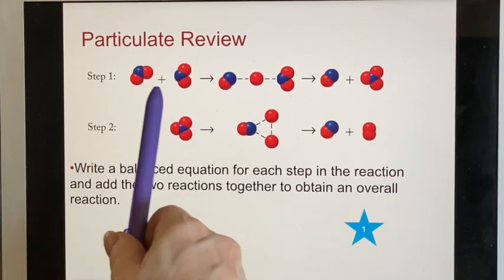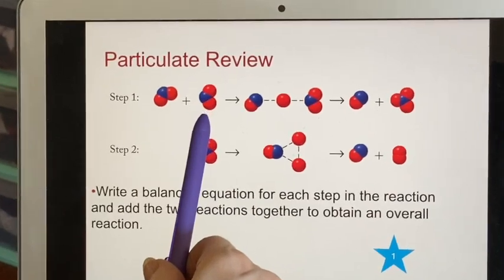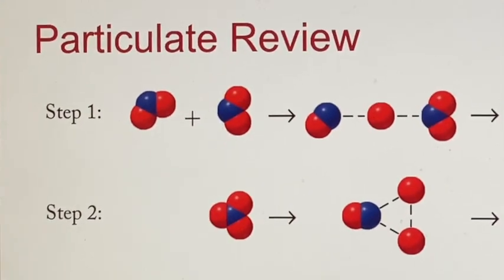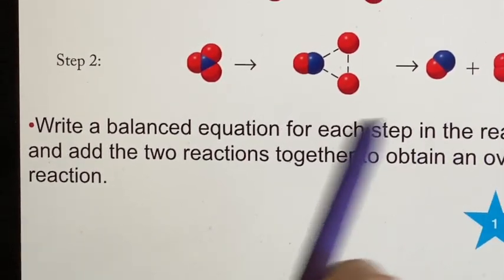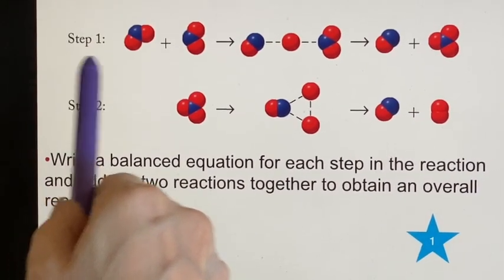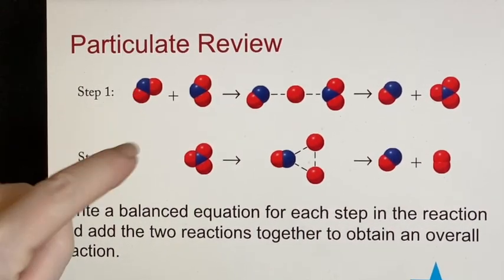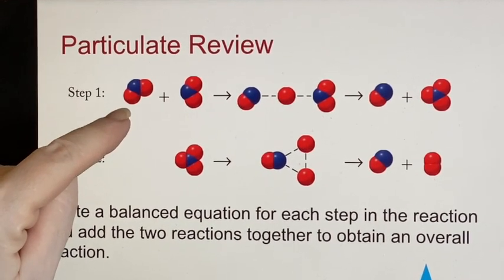We have two molecules that are of the same stuff. They didn't bother to do what they usually do, which is write down what they are. They're asking us to do that. Write a balanced equation for each step in the reaction. So there's step one. Let's try to write a balanced equation. Well, if it's blue, that's supposed to be nitrogen and red is oxygen.